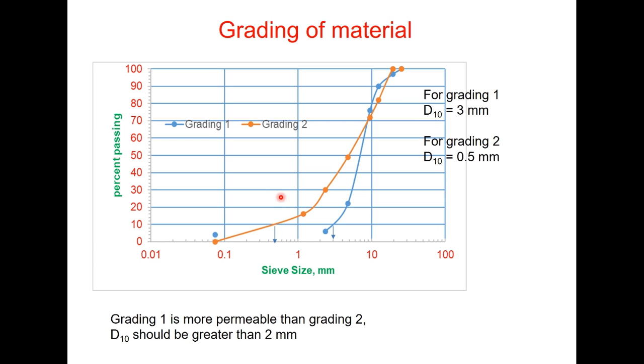Now I have given one example here, two gradings are taken here. Grading 1 and grading 2. Grading 1 is blue one and grading 2 is orange one. Now for grading 1, D₁₀ corresponding to 10 percent fine is 3 millimeter and for grading 2 it is just 0.5 millimeter. Now larger the value of D₁₀, more will be the permeability of the mix and D₁₀ should be greater than 2 millimeter. For better performance of the material D₁₀ should be greater than 2 millimeter and here you can see that this grading blue one is better than the orange one.